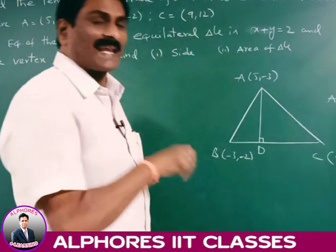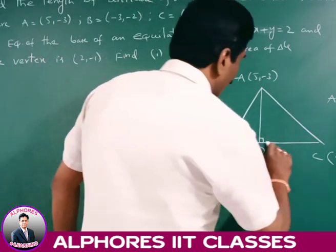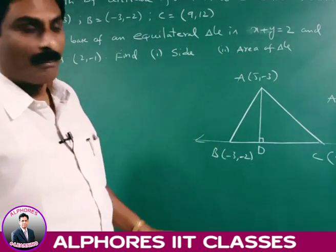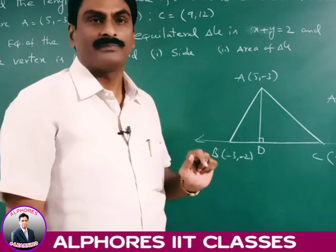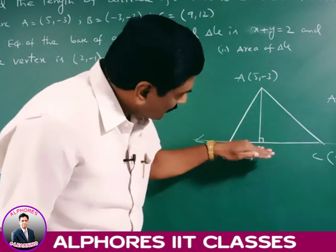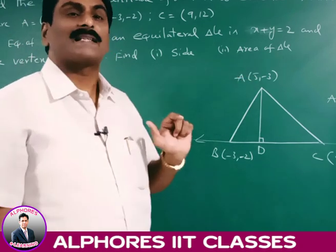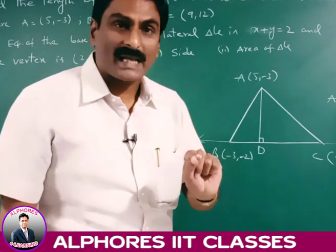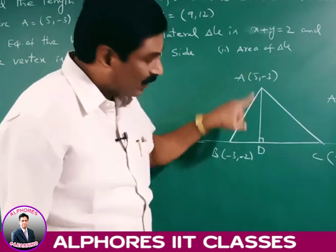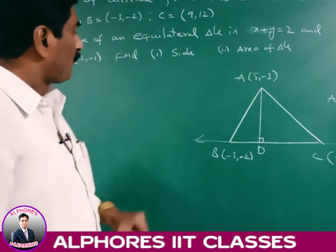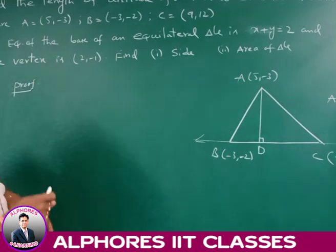We need to find the length of AD. We find the equation of the line BC. Since B and C are given, by using the two-point form we find the equation of side BC. Once the equation of BC is known, the distance from a point to the line is |AX₁ + BY₁ + C| / √(A² + B²).